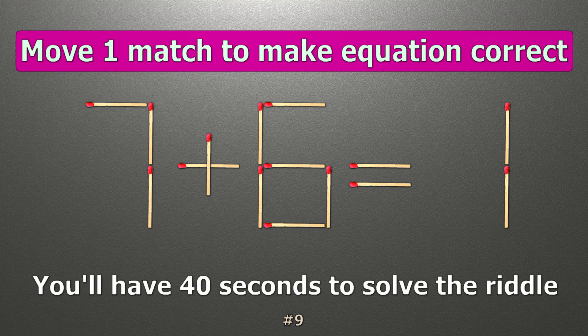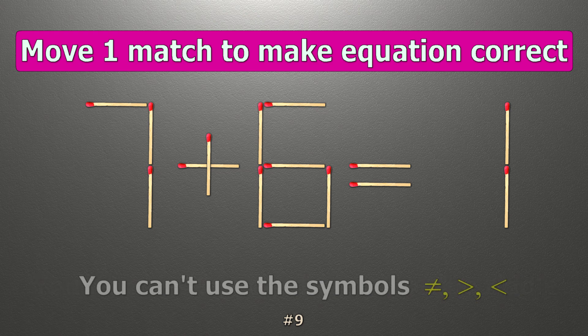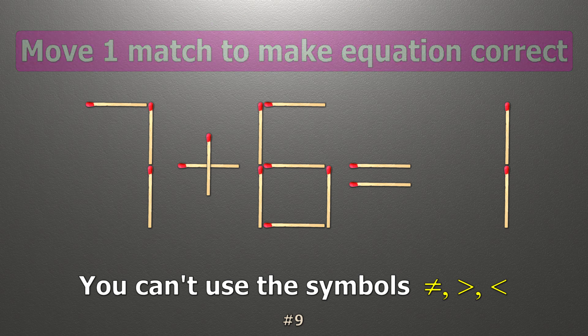We have the equality 7 plus 6 equals 1. Our equality is wrong. We need to move one match to make our equality correct.